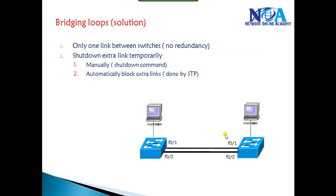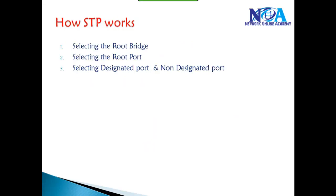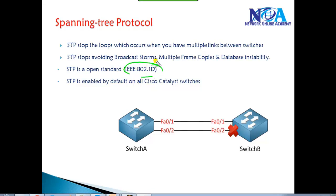In the previous section we discussed about bridging loops and alternatives to stop them. In this section we'll discuss what STP is, a basic introduction, and how it is going to prevent loops. STP stands for Spanning Tree Protocol, and as per IEEE it's the 802.1D standard, which was initially developed by Digital Equipment Corporation but later made into a standard. It runs on every switch by default.